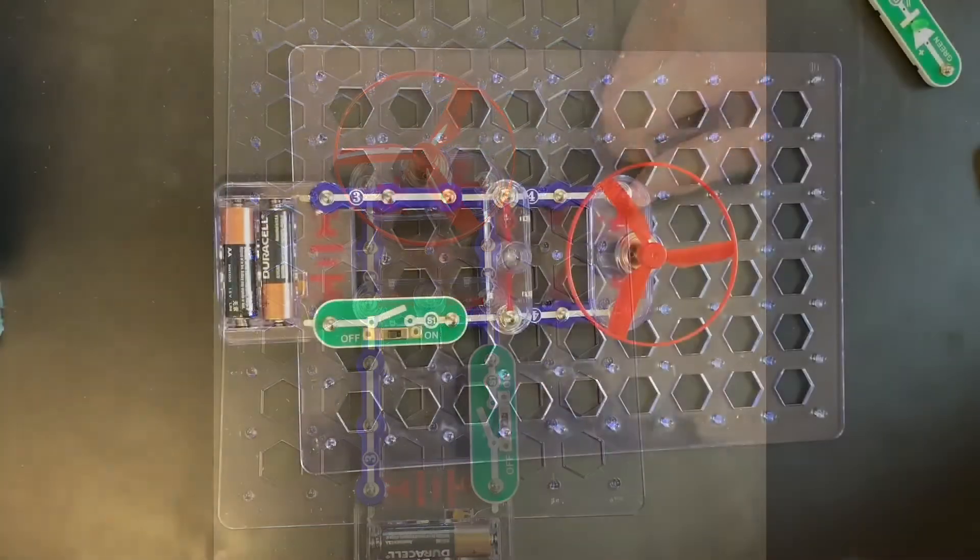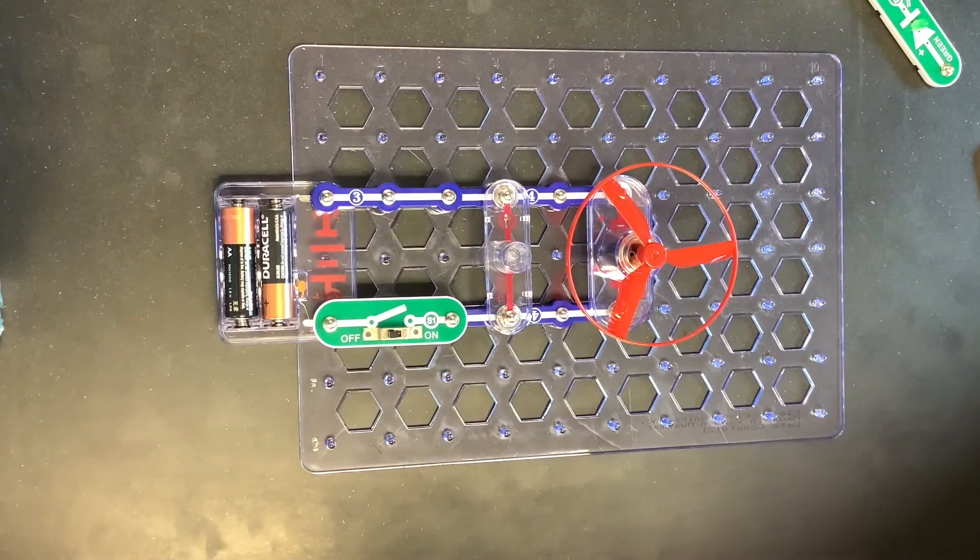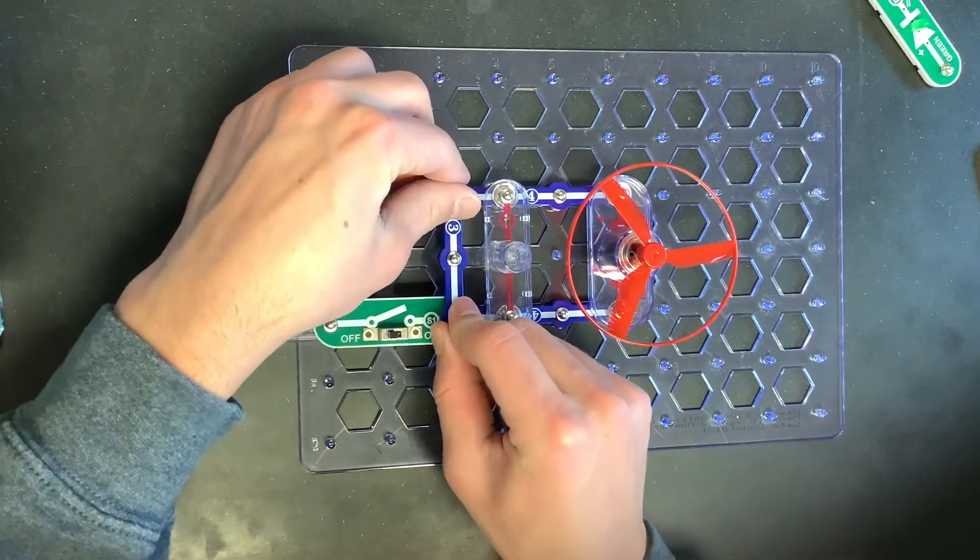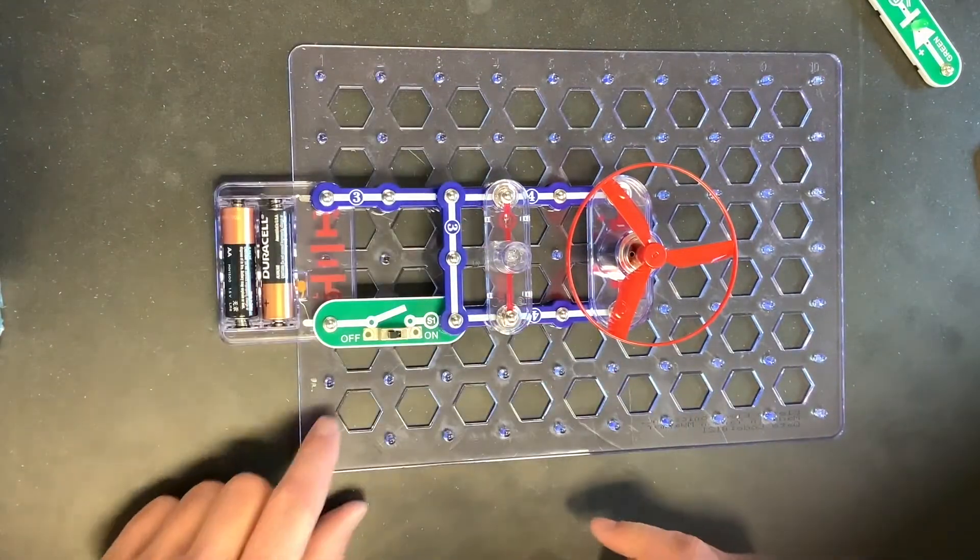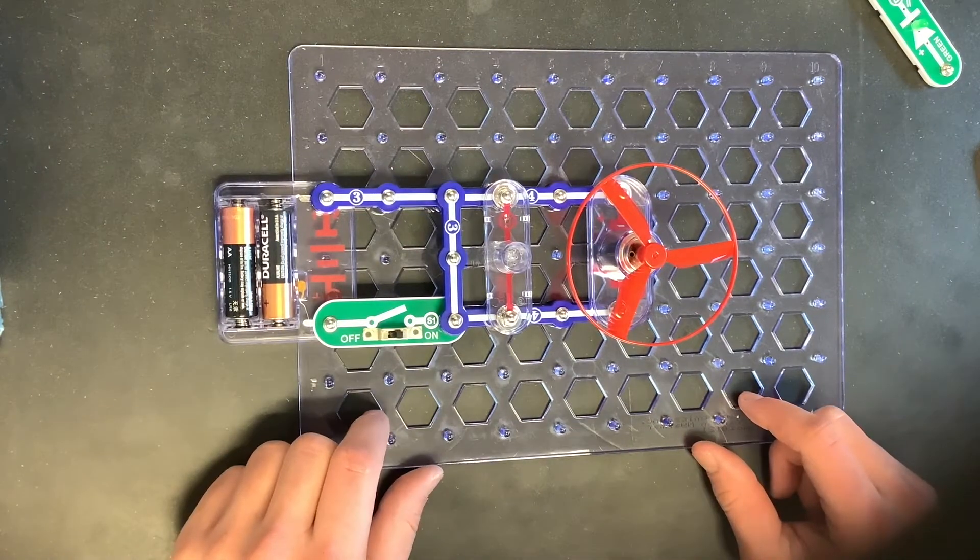For this next part, we're going to keep the circuit that's the exact same as in circuit six. But then we're going to take an extra connector here. And then we're going to connect it right there. And then if we turn this on, nothing happens in the circuit.